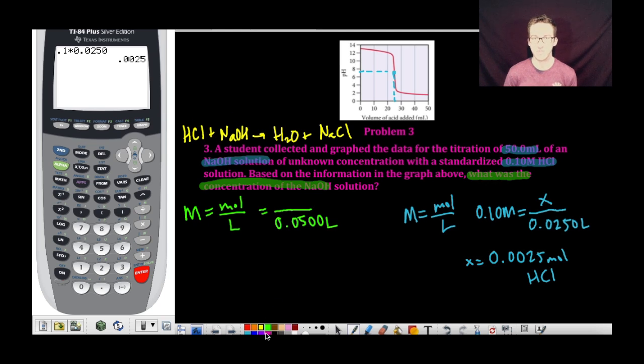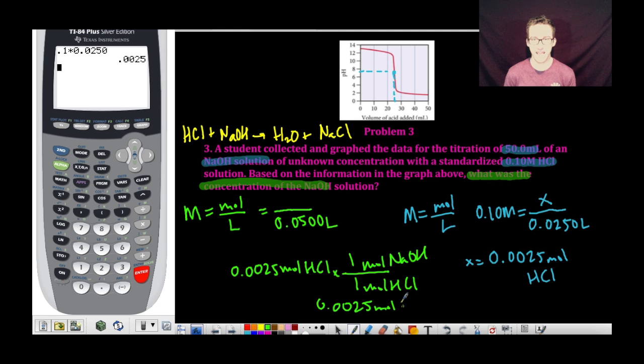which means that if I have 0.0025 moles of HCl, I'm also going to have 0.0025 moles of NaOH because the ratio in the balanced chemical equation is 1 to 1. So I plug that back into my original molarity calculation. A quick trip to my calculator indicates that my concentration is 0.05 molar.